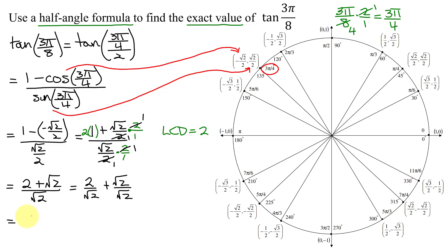So my first term does not simplify, but remember we do not want to leave radicals in the denominator. So I'm going to rationalize the denominator by multiplying numerator and denominator by the square root of 2.